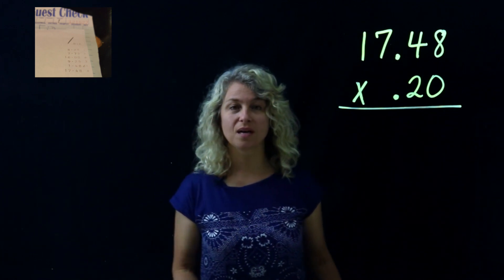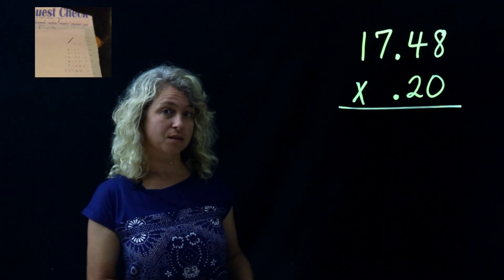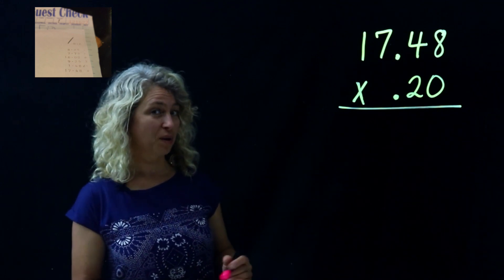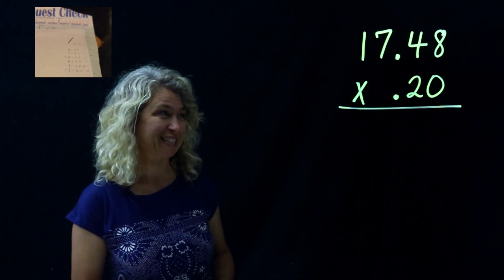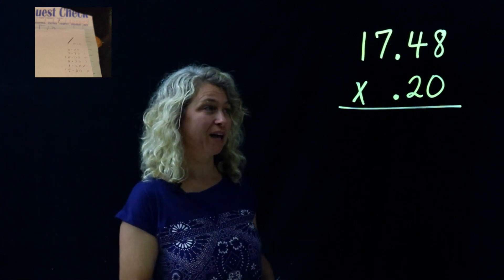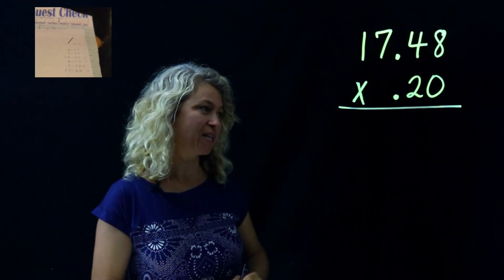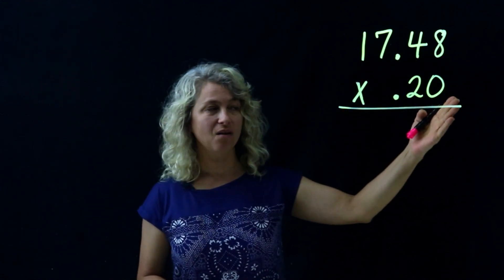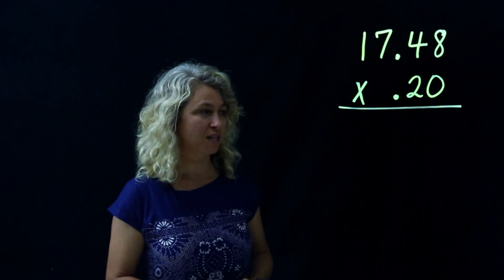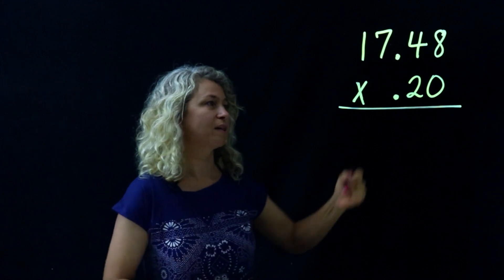All right, so today we're going to multiply numbers with decimals. We went to the Mexican restaurant and I said, hey, this would be a great math lesson. Let's multiply our tip times our total bill, $17.48, and we gave our waitress a 20% tip, which is 20 hundredths, and so let's just multiply this out.